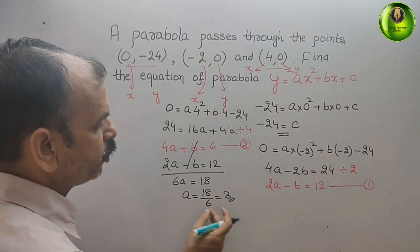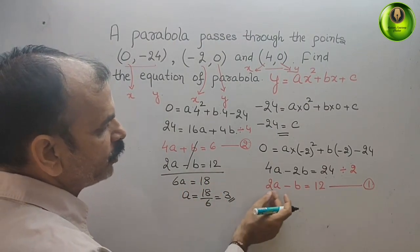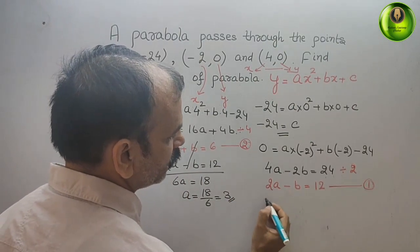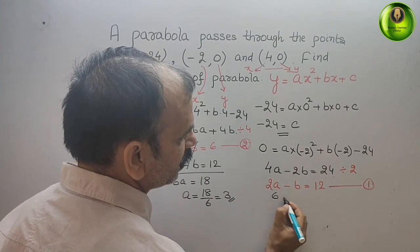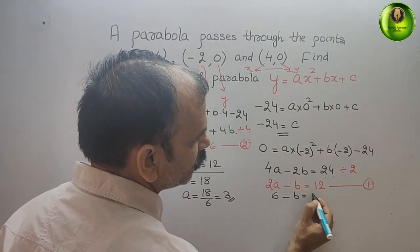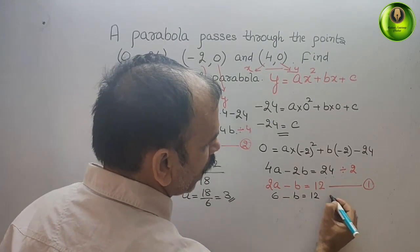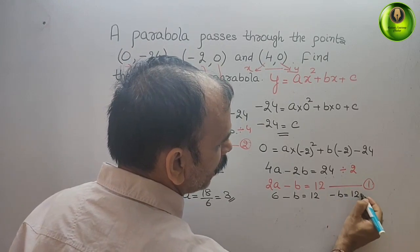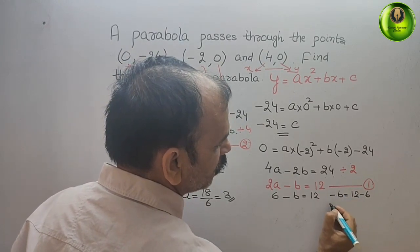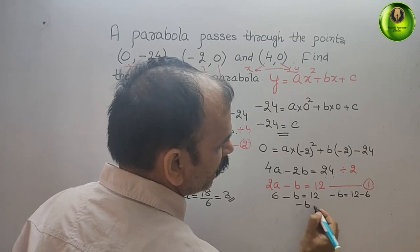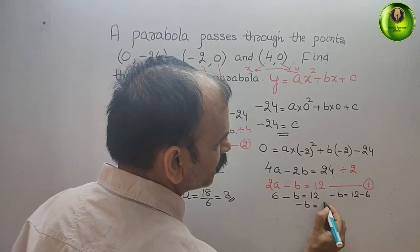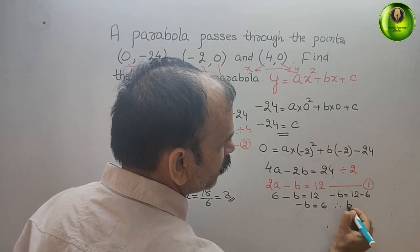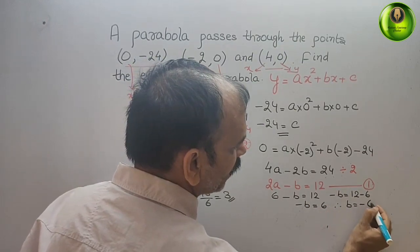Therefore a = 18/6 = 3. Now substitute a = 3 back into the first equation: 2(3) - b = 12, so 6 - b = 12. That gives -b = 12 - 6 = 6, therefore b = -6.